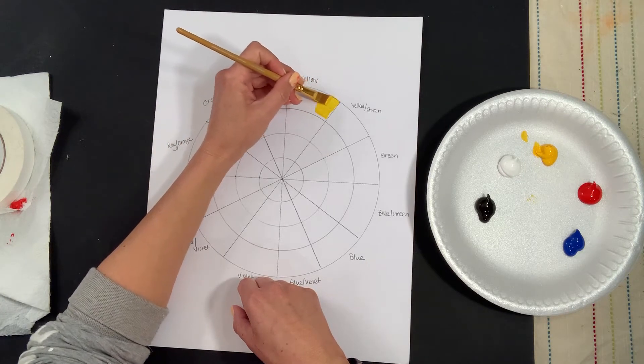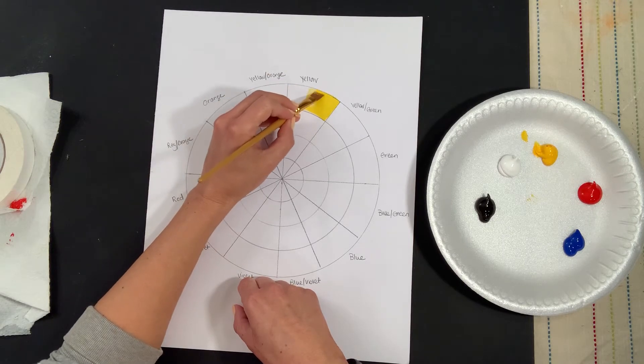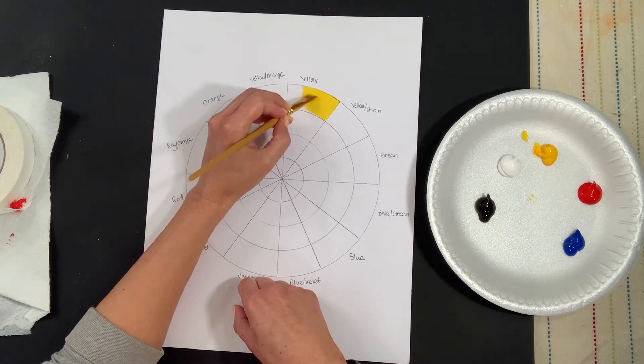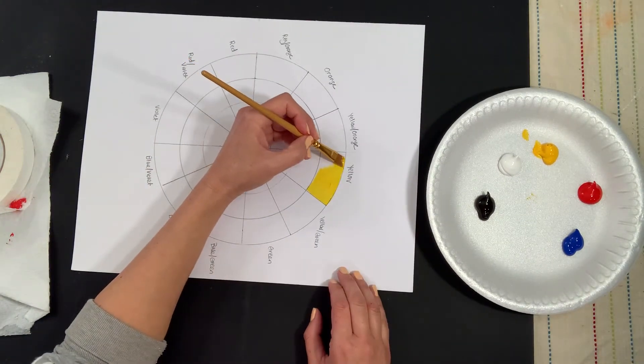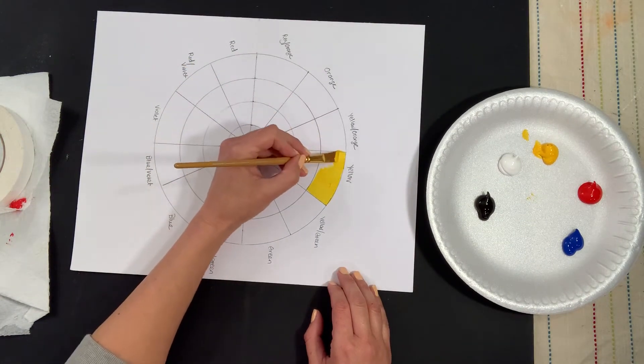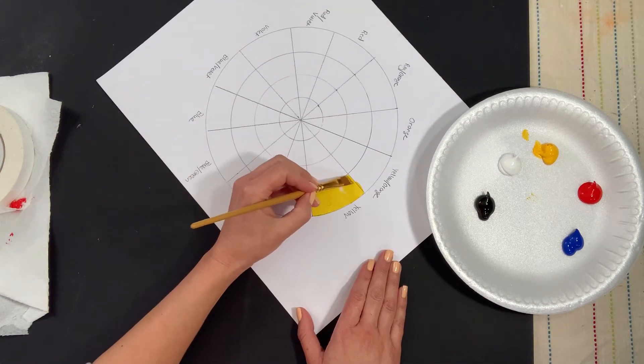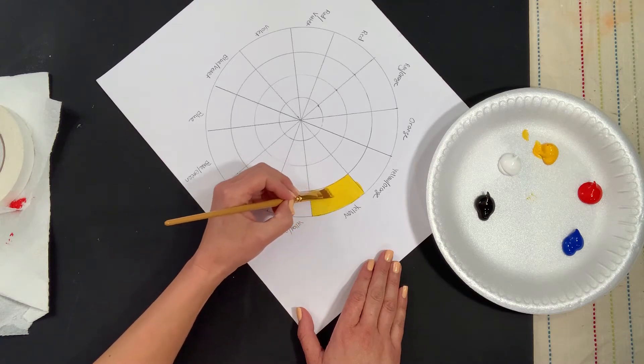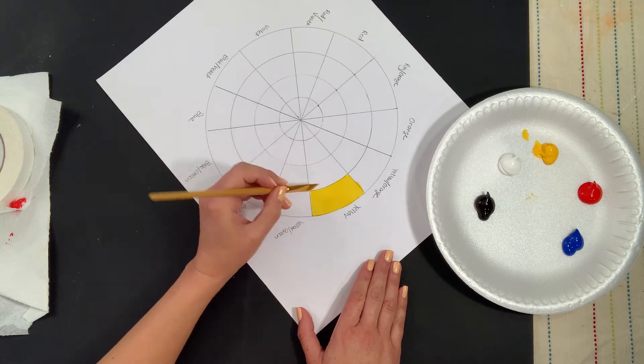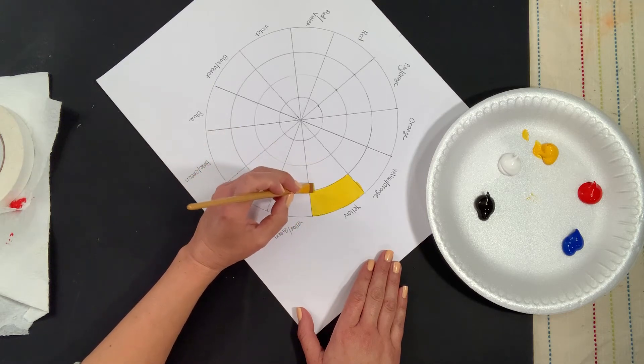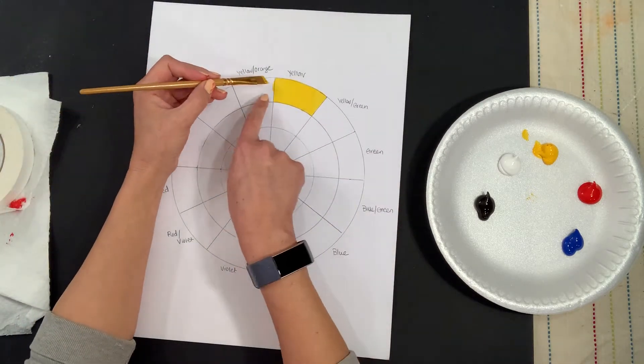So first of all, working with yellow. Yellow is probably again the most challenging color because it is so translucent. And if you want it to be a brighter or more thicker in application, all you need to do is continue to layer and wait for it to dry. And I turn my paper just to make sure I get all the corners and edges in.